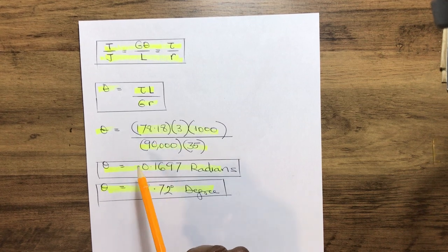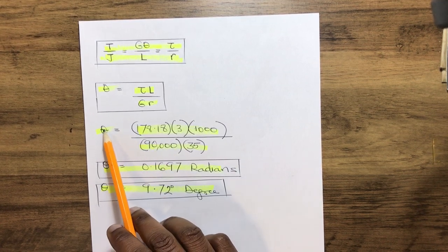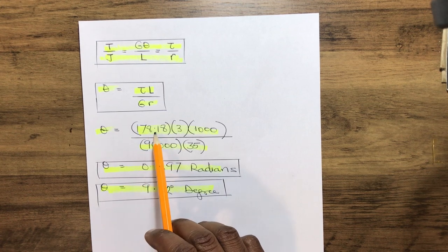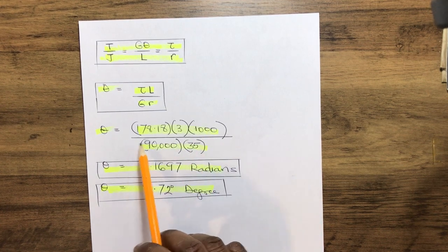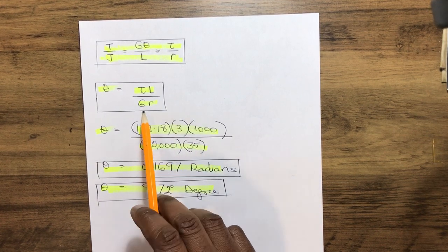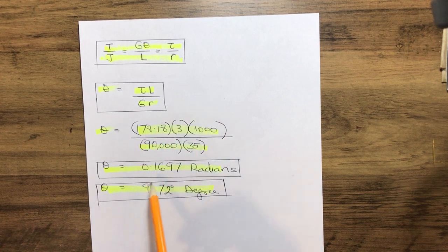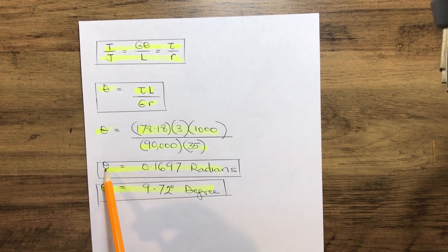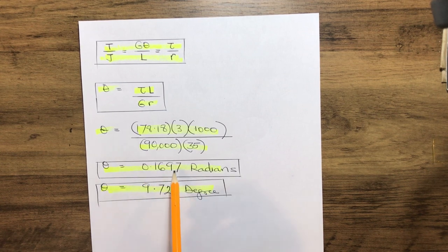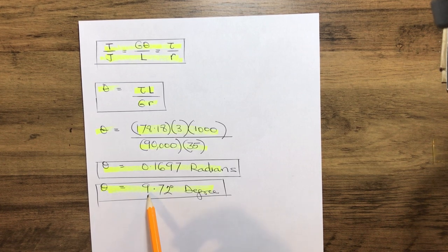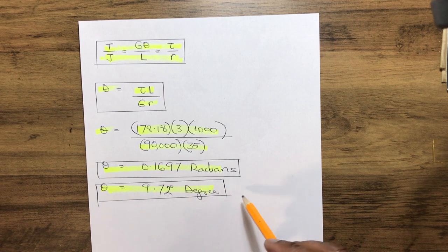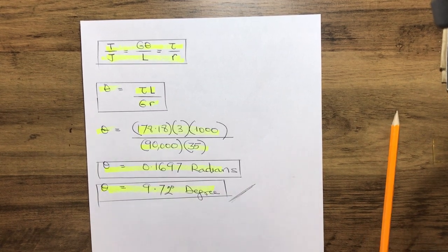Slotting in the parameters: θ equals 178.18 multiplied by 3000 (the length in millimeters), all divided by 90,000 (the value of G) multiplied by 35 (the radius). This gives an angle of twist of 0.1697 radians. Converting to degrees by multiplying by 180 over π, we get 9.72 degrees.